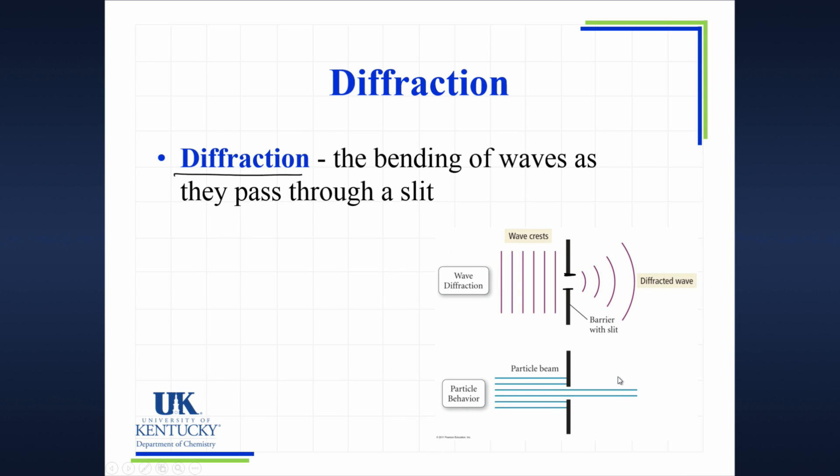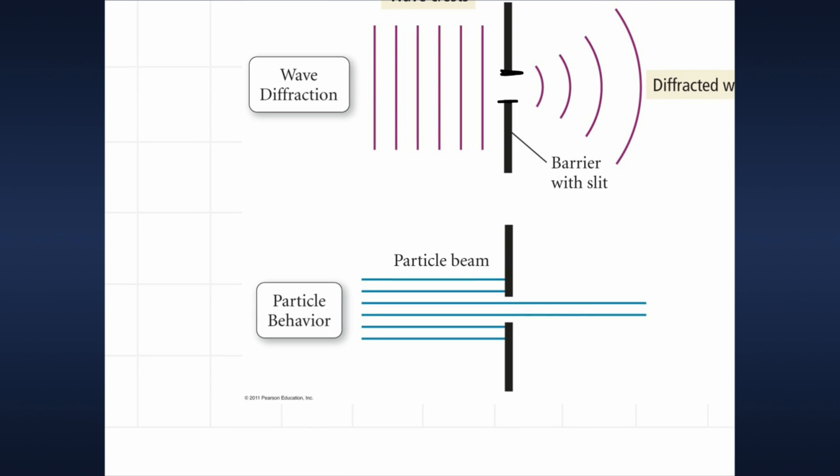So that's opposite of what we see down the bottom right of the screen. If something is approaching a slit, that is just particles. Let's say it's a sandstorm and the sand is being blown in the direction, it's just particles. What will happen if the particle is approaching the slit, it'll just keep going straight on through that slit. And that is what we see with a particle.